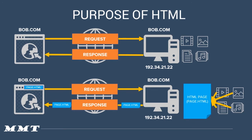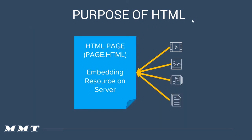The second purpose of HTML is to display the content onto the web browser. The main purpose of HTML is to embed resources on the server — the resources could be video, image, text, or any data sitting on the server — and display that onto the client machine, onto the browser. When you create an HTML page and write HTML code in it, that code can be used to display the content from the server onto the client machine.